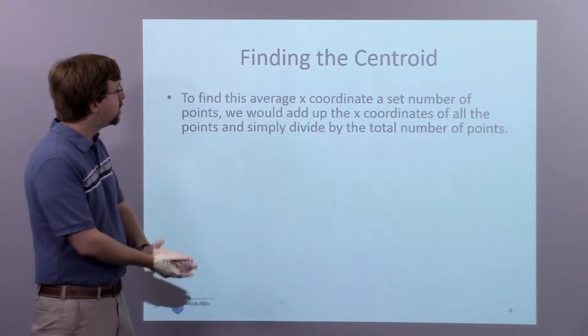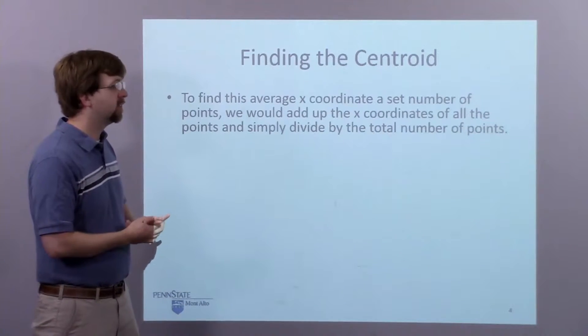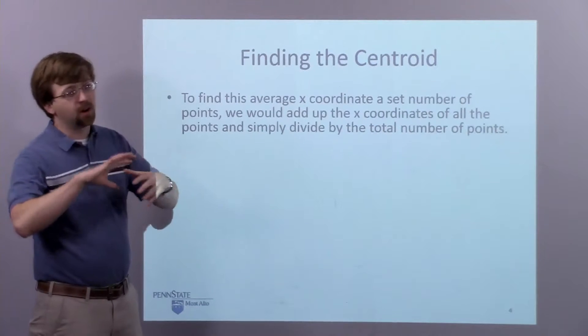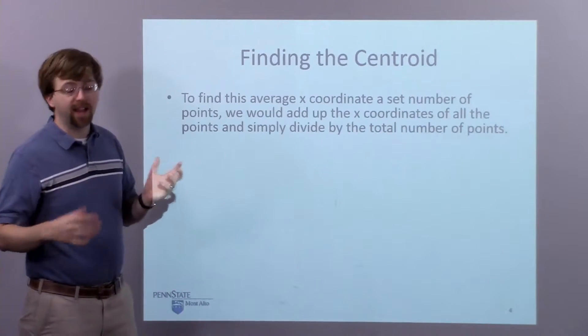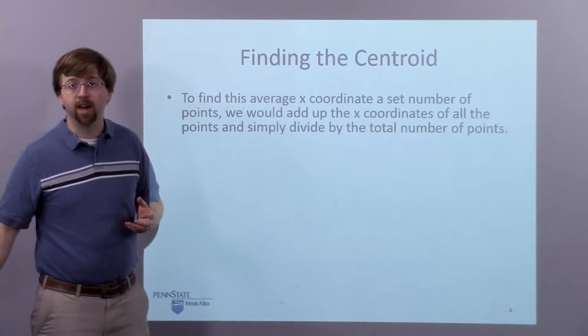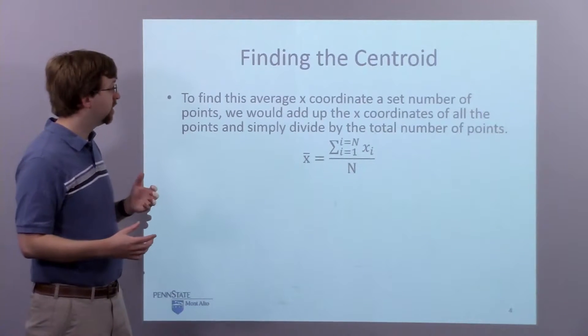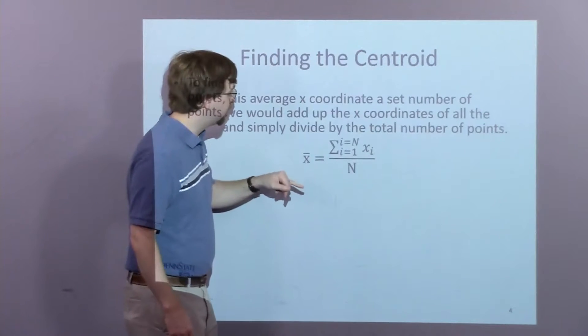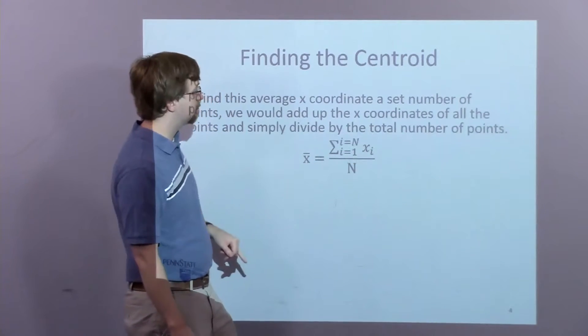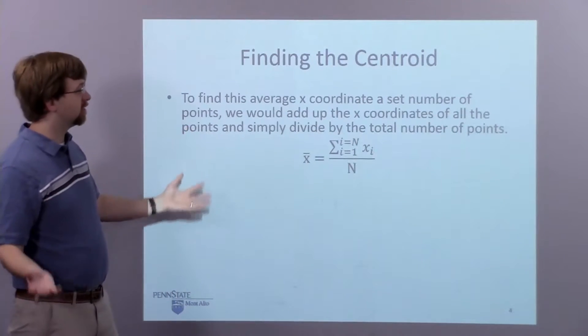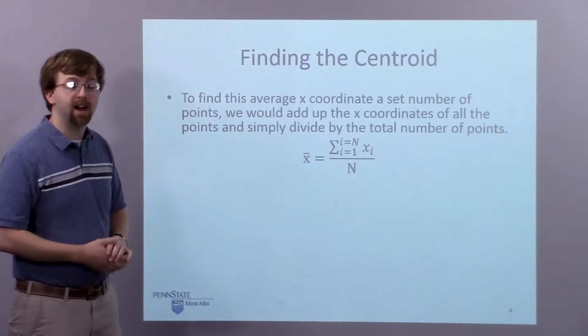So to find the average x coordinate of a set number of points, we've got all these points kind of floating around in this volume. The average x coordinate of those points, when we take all those points, we sum up all of the x coordinates, and we divide it by the number of points. And so I just add up all the x coordinates, divide it by n to find my average.